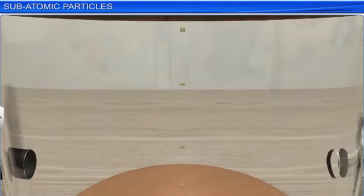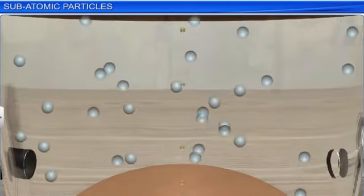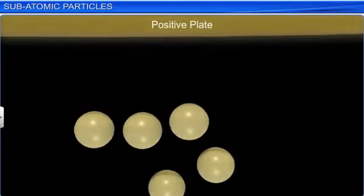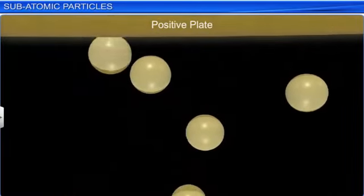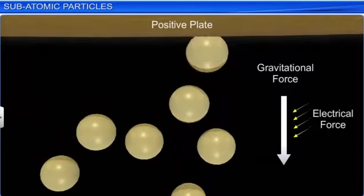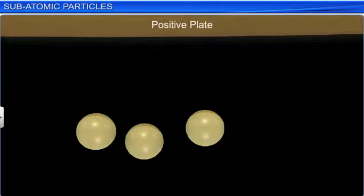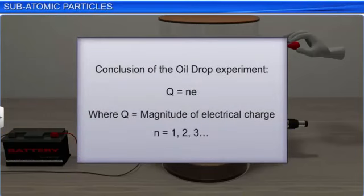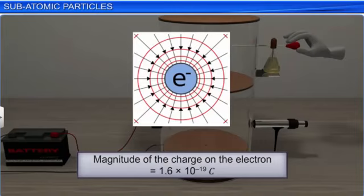Millikan sprayed oil droplets into the electrical condenser. As the droplets fell through the upper plate hole, he measured the rate of fall and used it to calculate their mass. He then ionized the air inside the condenser by passing a beam of X-rays through it. The X-rays displaced electrons from air molecules, which negatively charged the oil droplets. On applying voltage to the upper positive plate, the charged oil droplets got attracted towards it against gravitational and electrostatic forces. Millikan then varied the voltage to strike a balance between the acting forces and to make the oil drops stationary. He calculated the charge on the droplet from the mass of an oil droplet and the charge on the plate. He found that the magnitude of electrical charge Q on the droplets is always an integral multiple of the electrical charge E, that is, Q equals NE.